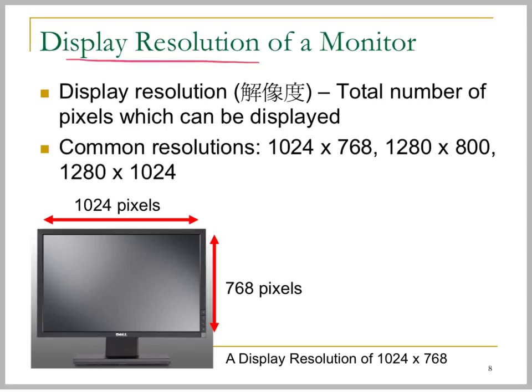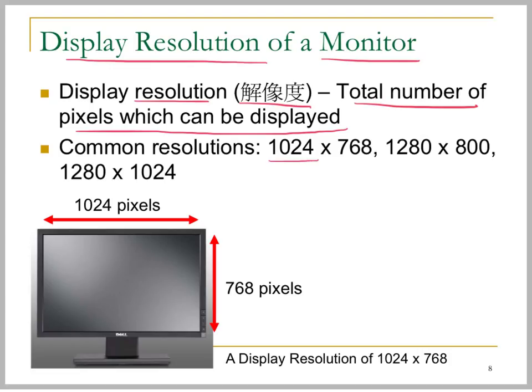The display resolution of a monitor is measured in pixels. We call the total number of pixels which can be displayed on a computer screen the display resolution. For example, if the resolution is 1024 by 768 pixels, that means horizontally there are 1024 pixels.